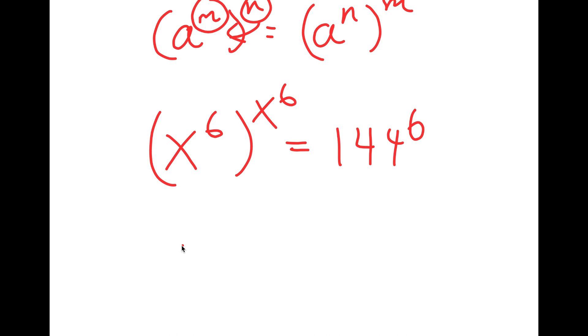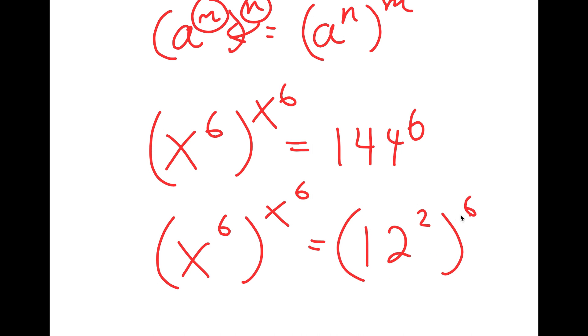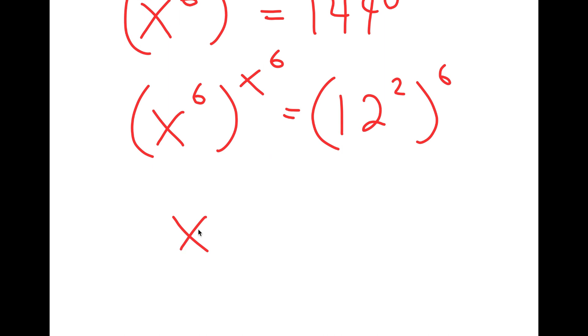And 144 is the same thing as 12 squared. So I get x to the power of 6 to the power of x to the power of 6 is equal to 12 squared to the power of 6. So now this turns into x to the power of 6 to the power of x to the power of 6 is equal to 12 to the power of 12.